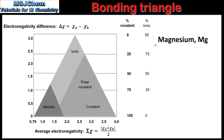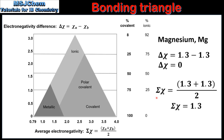The last example is Magnesium. The difference in Electronegativity is 0, and the average Electronegativity is 1.3. Plotting 0 on the Y axis and 1.3 on the X axis puts us in the Metallic region of the Bonding Triangle. So the type of bonding in Magnesium is Metallic Bonding.